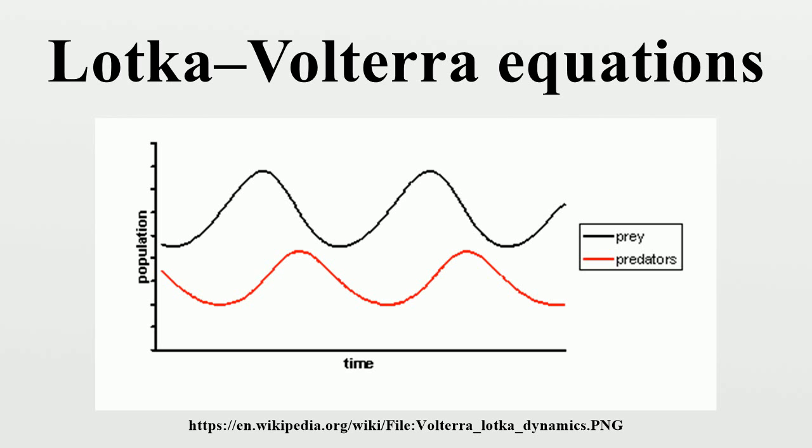A simple example: Suppose there are two species of animals, a baboon and a cheetah. If the initial conditions are 80 baboons and 40 cheetahs, one can plot the progression of the two species over time.